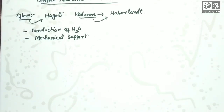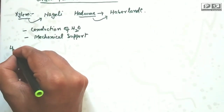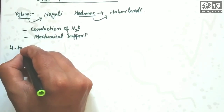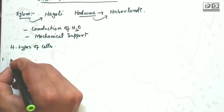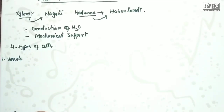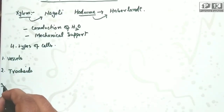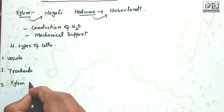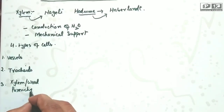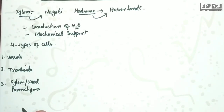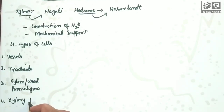If you have an angiospermic plant, there are four types of xylem. Number one: vessels. Number two: tracheids. Number three: xylem parenchyma, also called wood parenchyma. Number four: xylem fibers, also called xylem sclerenchyma.